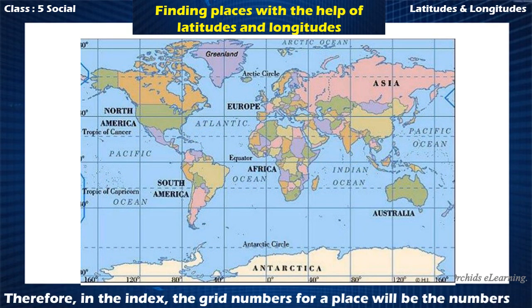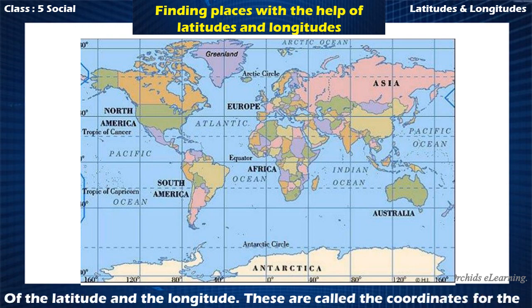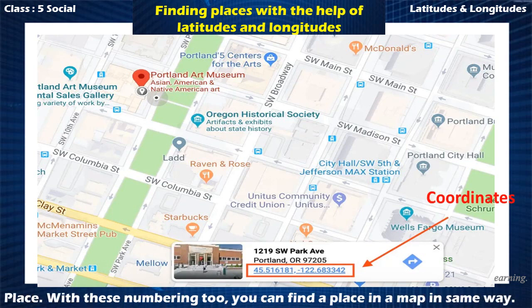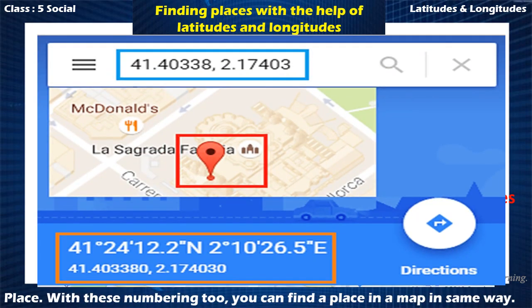Therefore, in the index, the grid numbers for a place will be the numbers of the latitude and the longitude. These are called the coordinates for the place. With these coordinates, you can find a place on a map in the same way.